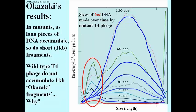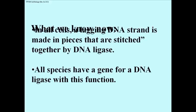Okazaki had demonstrated discontinuous synthesis of short pieces of DNA using the T4 ligase-deficient phage, which explained how one strand must behave at the replication fork. In his honour, these pieces of DNA were later named Okazaki fragments. We know that new DNA made along the lagging strand template is made in pieces that are later stitched together by DNA ligase, and that this occurs in all species and all cells. We also know that all species have genes for their own DNA ligase and can therefore make their own enzyme when they replicate their own DNA.